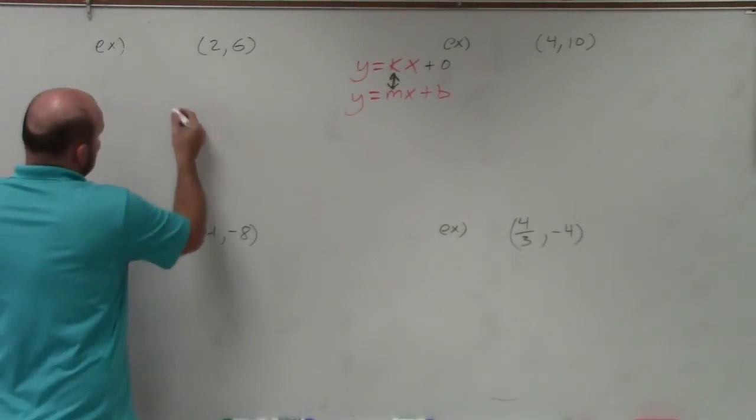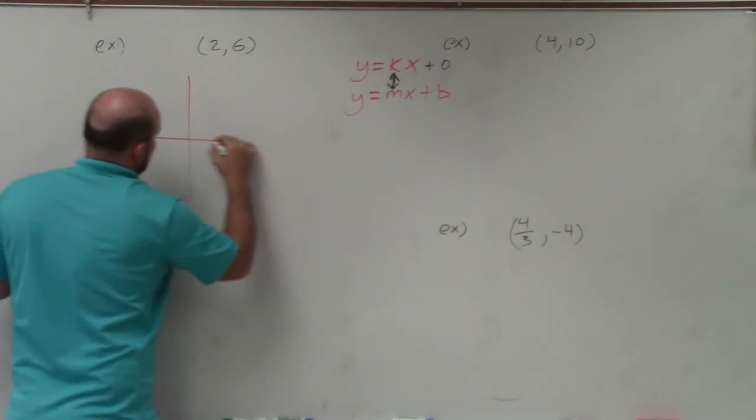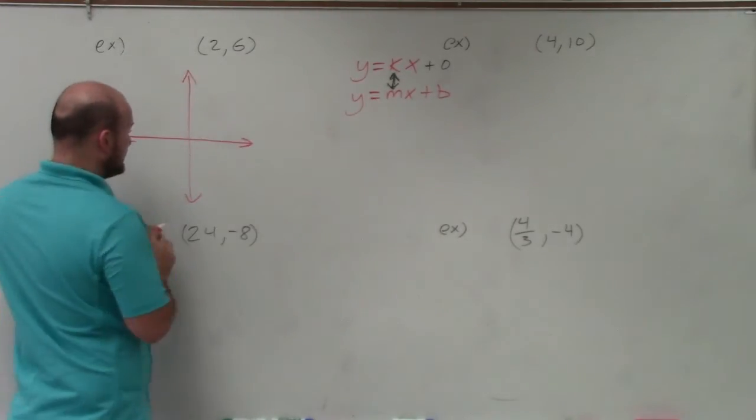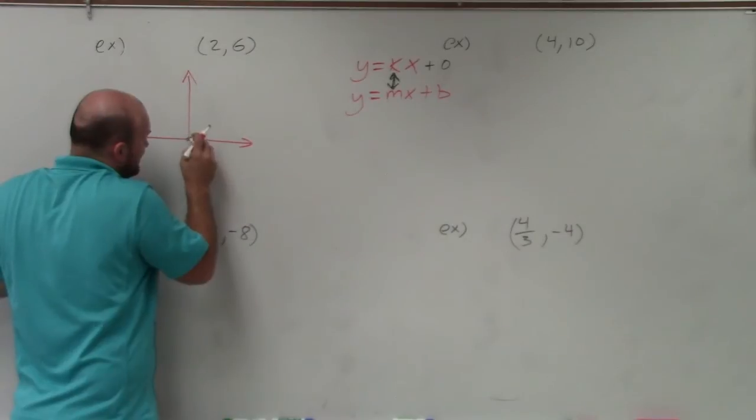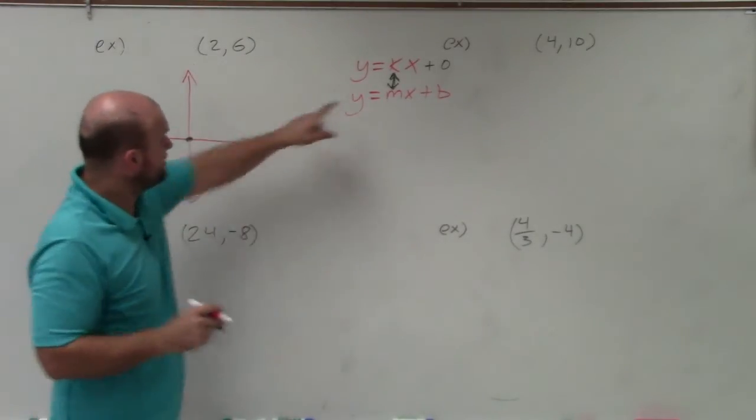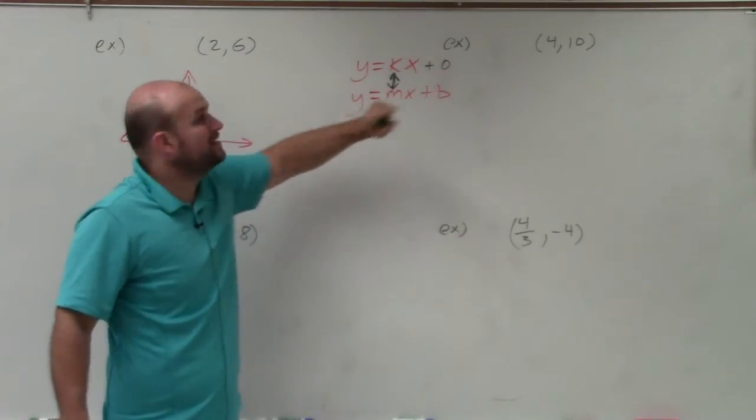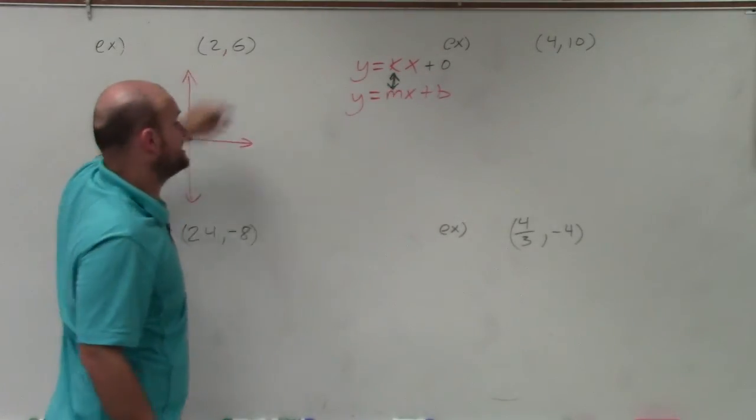So the best way for me to show you what to do, to visualize it, is to graph it. So we know that the y-intercept is going to be at 0, right? Because for it to be in direct variation form, it has to be 0. Then we also have a point that it's going to go through.